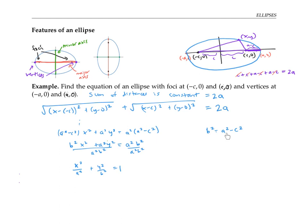Since b² = a² − c², it follows that b is less than a. In fact, b is half the length of the minor axis — the points (0, b) and (0, −b) are the endpoints of the minor axis. To see why, consider the two right triangles drawn here. The sum of the two equal side lengths must equal 2a, so each side length is a. The base of the triangle is c, so by the Pythagorean theorem this height squared is a² − c² = b², meaning the height is b.